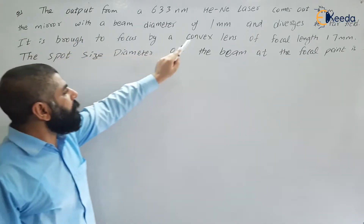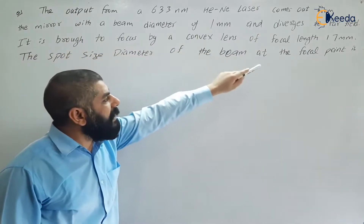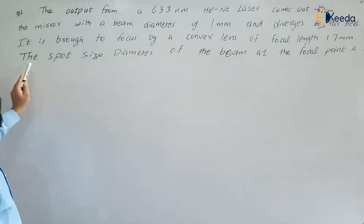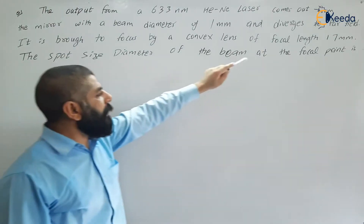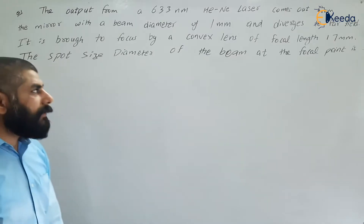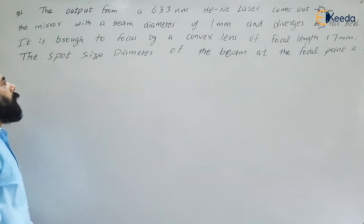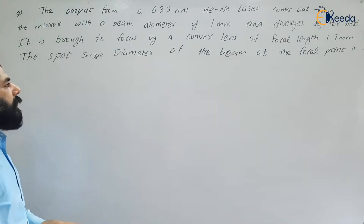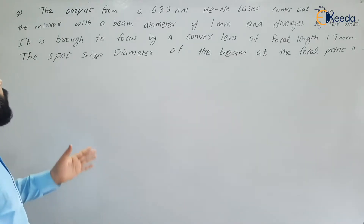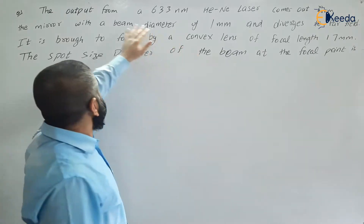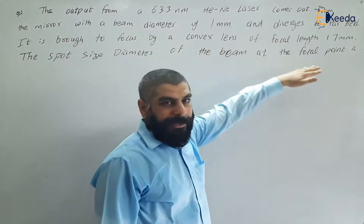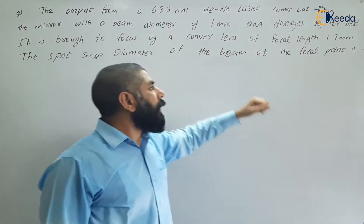It is brought to focus by a convex lens of focal length 17 mm. The spot size diameter of the beam at the focal point is to be calculated. So initially the laser diverges to far field, and then a convex lens is used.